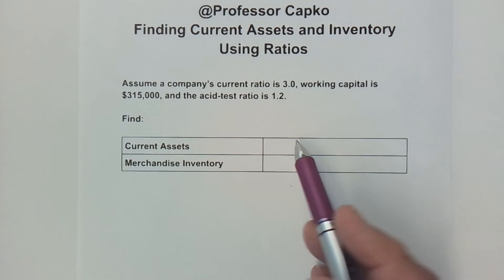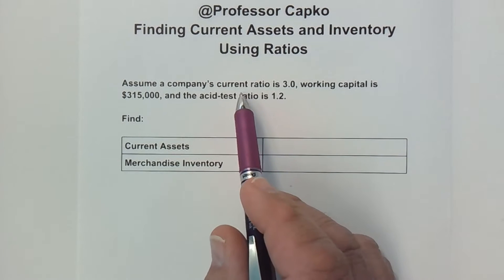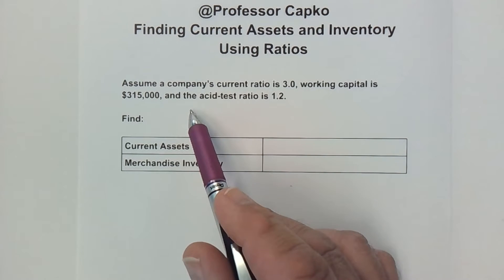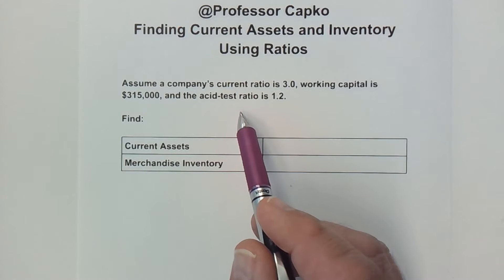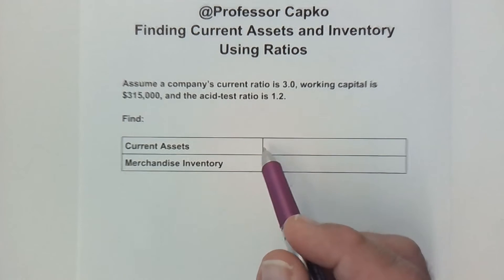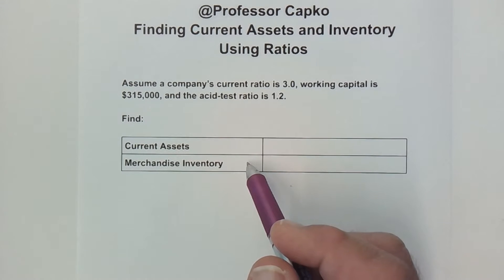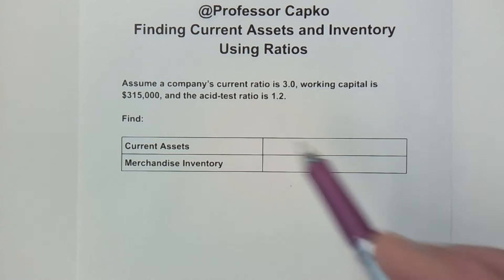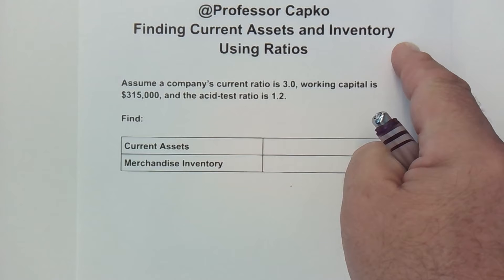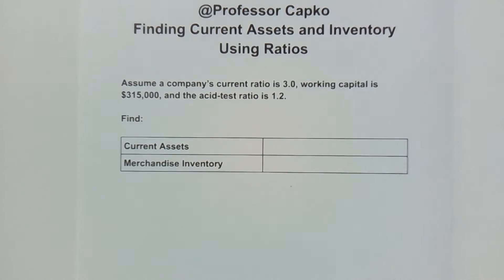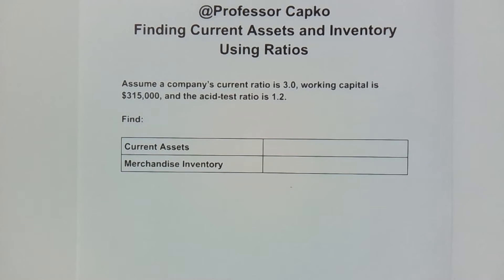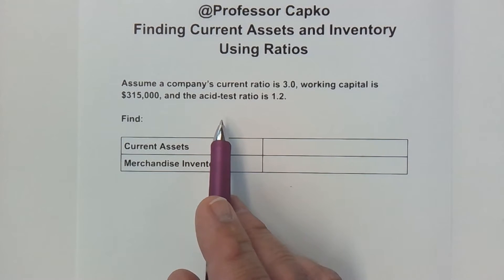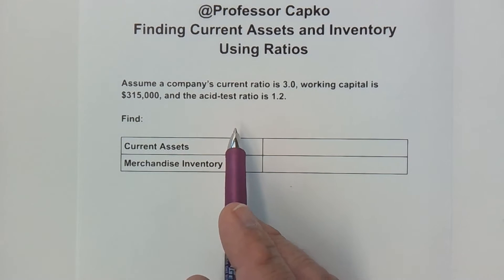In this example problem, you've been given the current ratio, the working capital, and the acid test ratio for a particular company. If you are not sure how to find a current ratio, I've got a video linked up here for you on that. In this example, we know that the current ratio is 3.0.